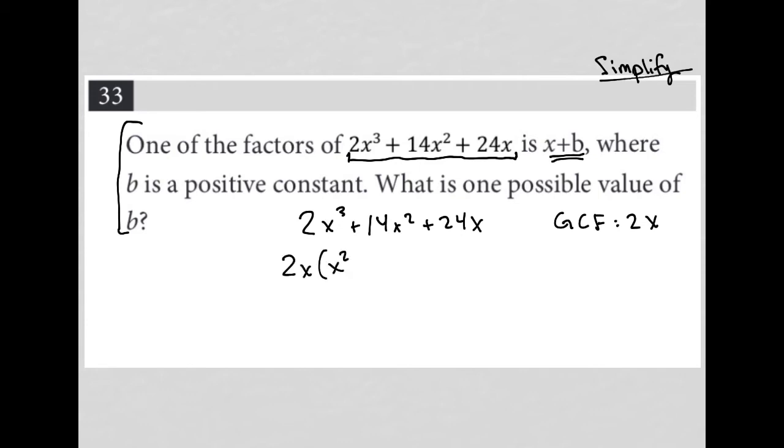x², right? Because I'm basically just saying, what would I need to multiply this 2x by in order to get that first term? Plus 7x—what would I multiply this 2x by to get that term? And then plus 12.